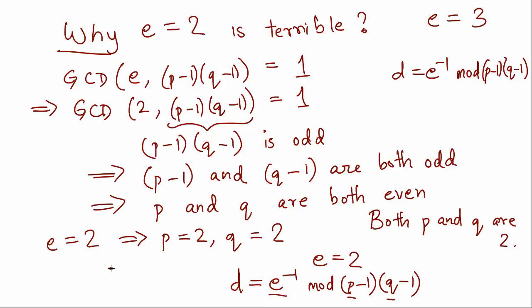So RSA is not secure anymore, Alice cannot send a secure message to Bob anymore. And that's why e equals 2 is a terrible choice for a value of e.